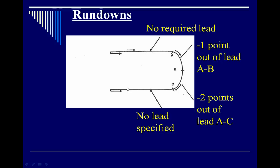On rundowns, whenever a horse is on a straightaway, no particular lead is required — they can be on the inside or outside lead and it doesn't matter. However, any time they enter into a curve, they must be on the inside lead. So from point A to B if they're not on the inside lead, it's a one-point penalty, and from B to C if still incorrect, another one-point penalty. When they exit back onto the straightaway, lead does not matter again.